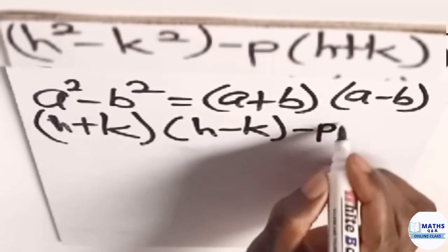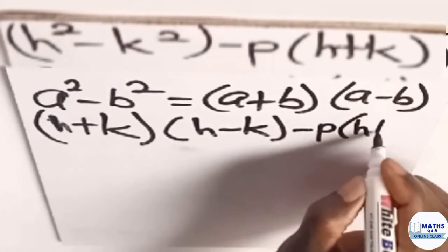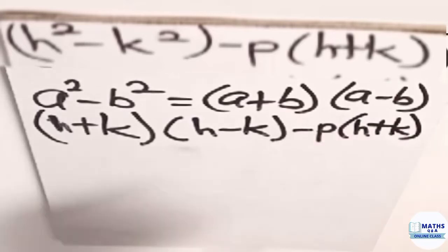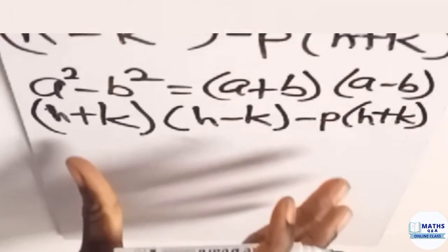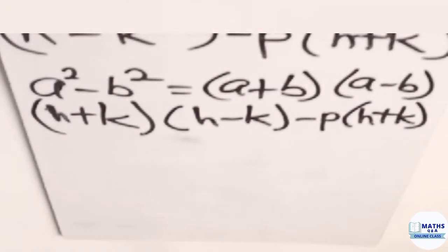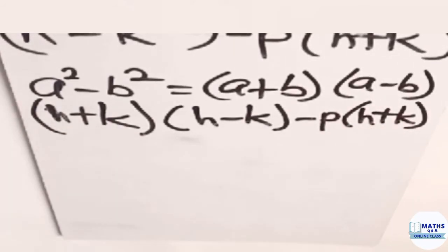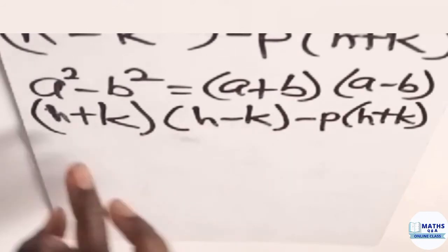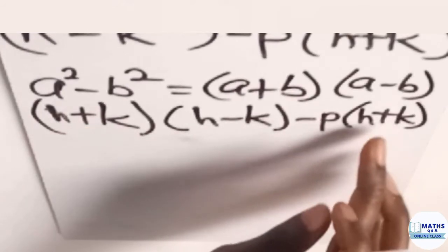Now, we have our minus p in a bracket h plus k. This one too is here. Now that we are having this result, you see that we have h plus k here and we also have h plus k here. So we've seen one common factor here, which is h plus k, h plus k.